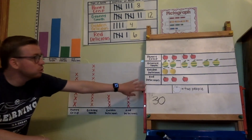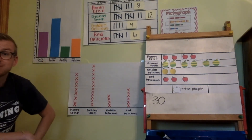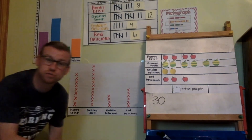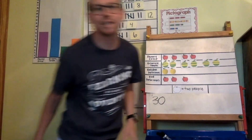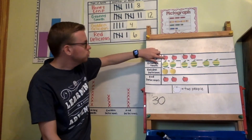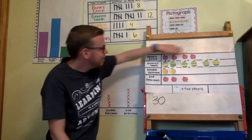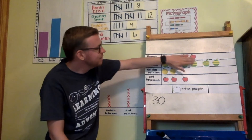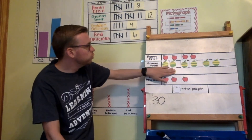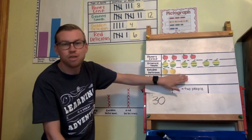Let's figure out how we could use the pictograph. Count by twos for all those apples: two, four, six, eight, ten, twelve, fourteen, sixteen, eighteen, twenty, twenty-two, twenty-four, twenty-six, twenty-eight, thirty. Thirty people total.